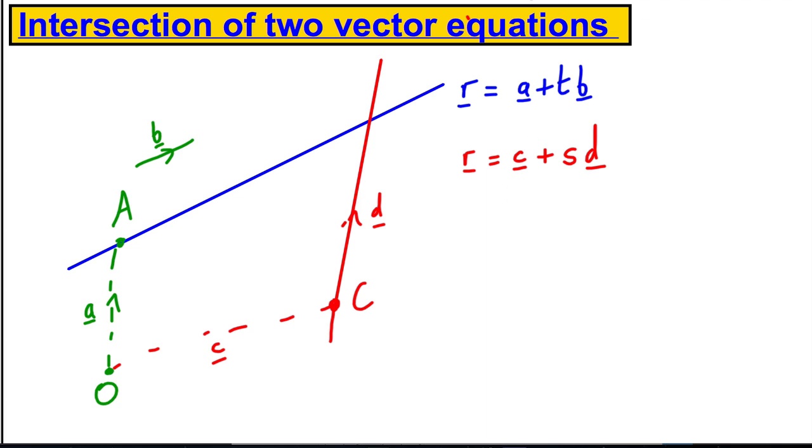So they're two vector equations of a line. Now these two lines may meet each other, they may meet at this point here, they may not meet. You can imagine in three dimensions one might go over the other. They may not meet or they may meet.